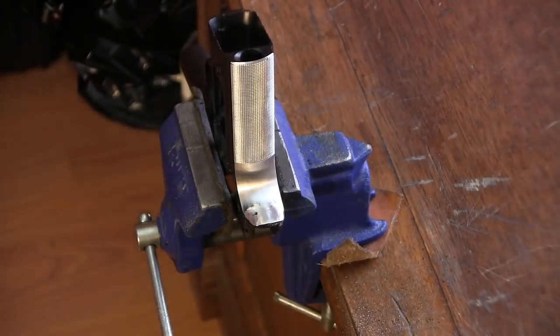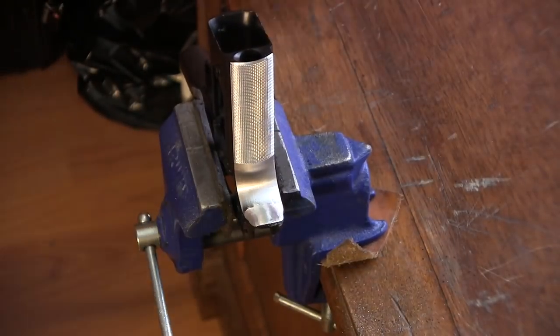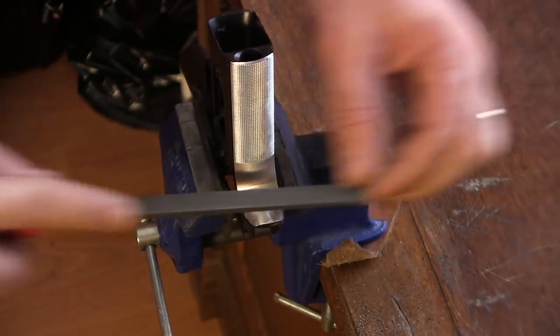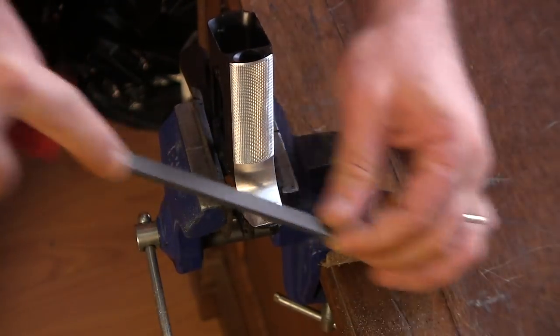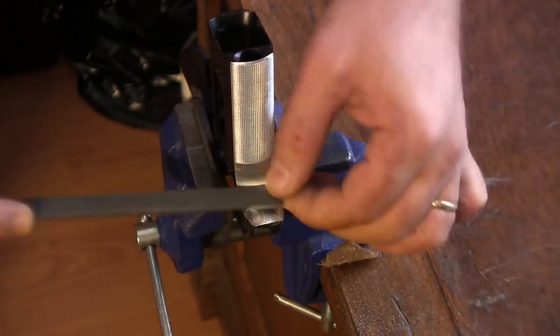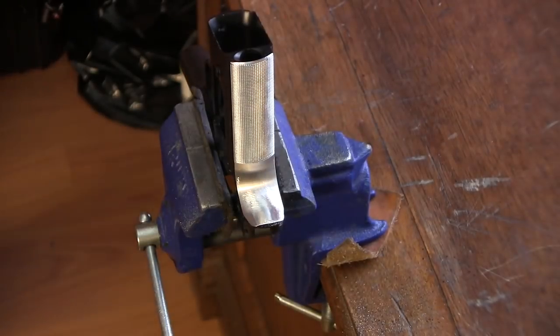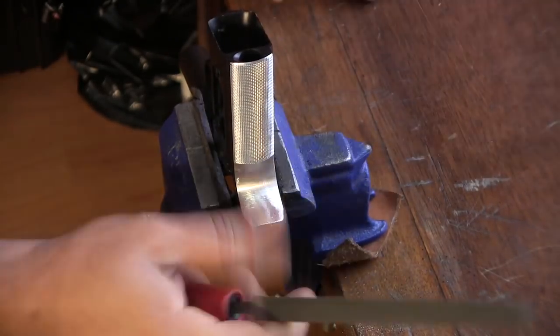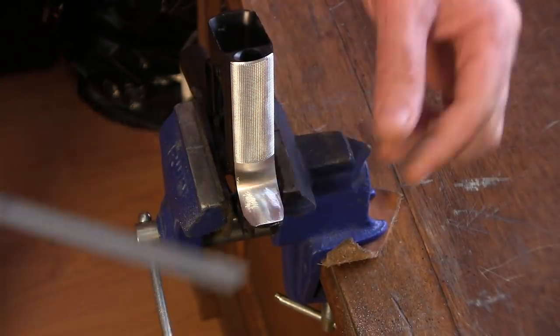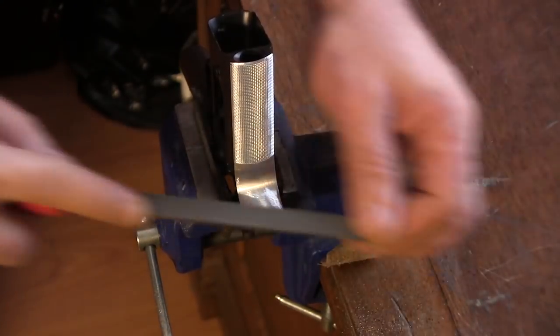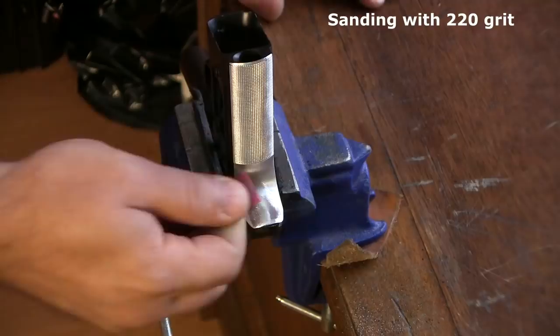So right now I'm just blending what I've done to the existing shape. And then I will round the very edge, the new edge that I've created, because it was kind of sharp. So that edge is going to be rounded, and after that I'm just going to sand it by hand without using any backers.